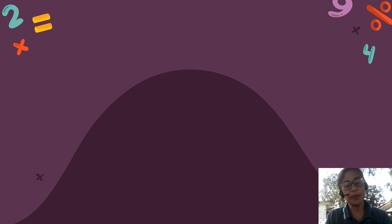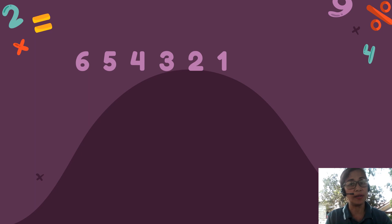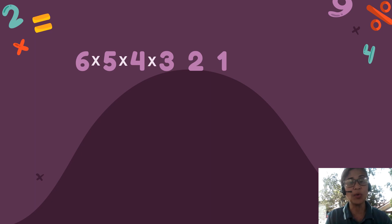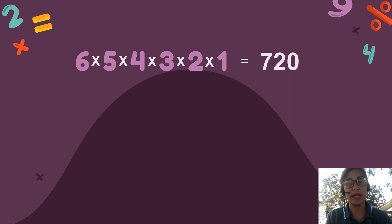Out of curiosity, let me list the numbers that are consecutive from 6 to 1. They are 6, 5, 4, 3, 2, 1. And then multiplying 6 times 5 times 4 times 3 times 2 times 1, it will be equal to 720.